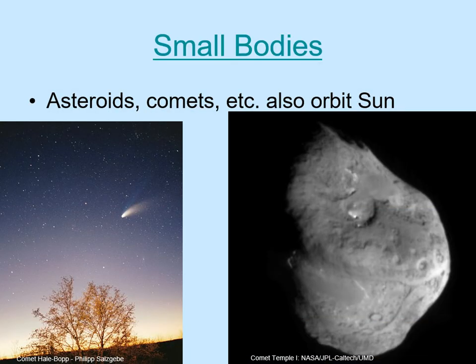Besides the planets and dwarf planets, there are lots of still smaller things orbiting the Sun, like comets and asteroids. The biggest of them can be as big as a large U.S. state, but most are much smaller than that. These pictures show two views of comets. On the left is the more familiar one — a glowing cloud of gas and dust, often with a long tail, sitting in the night sky. But most of a comet's mass is the small, city-sized chunk of ice and rock that you see on the right. It's only when comets get close to the Sun that they spew out all that gas and dust that we see in the picture on the left.